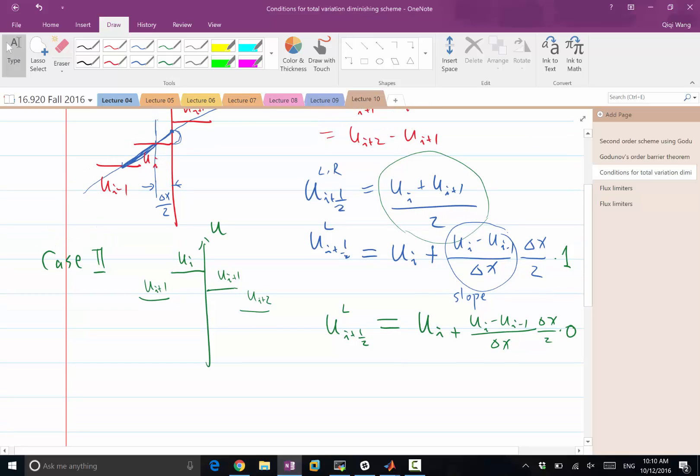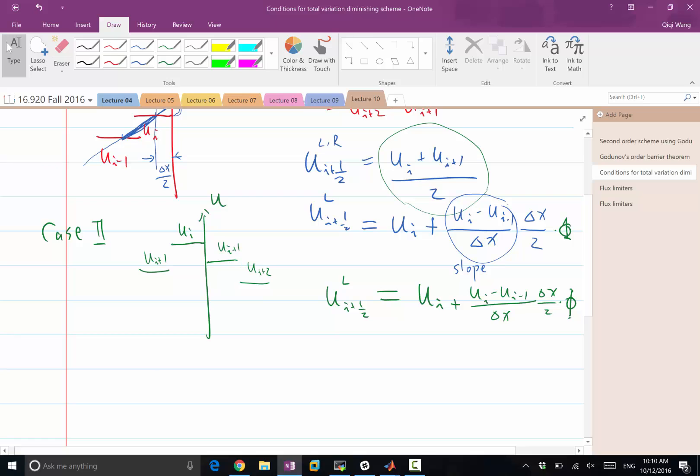That's something we call a limiter, right? So we can write this as phi 0 or 1, right? And this phi is equal to 1 for smooth solution and 0 for local extrema.